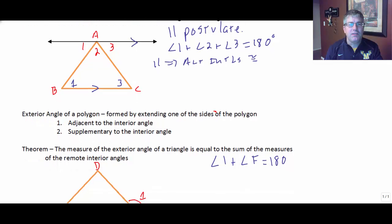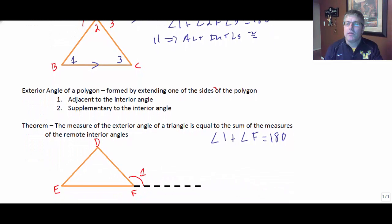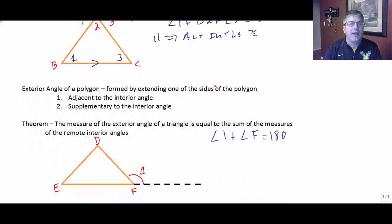Let's look at some definitions. One thing we need to be familiar with is the exterior angle of a polygon, that's something new. An exterior angle of a polygon is formed by extending one of the sides of the polygon. So here, down in triangle EDF, you can see I have extended side EF to continue out.